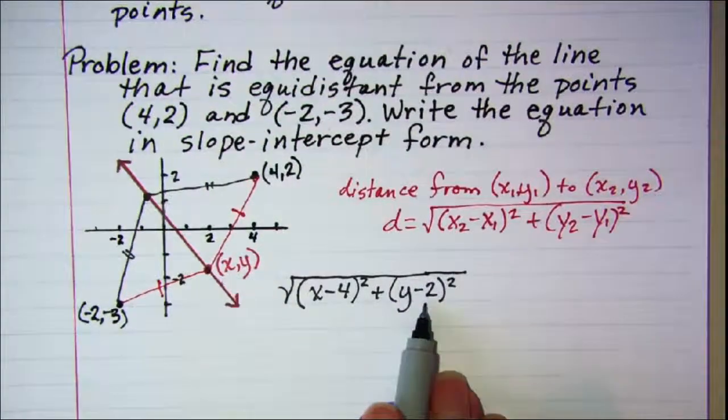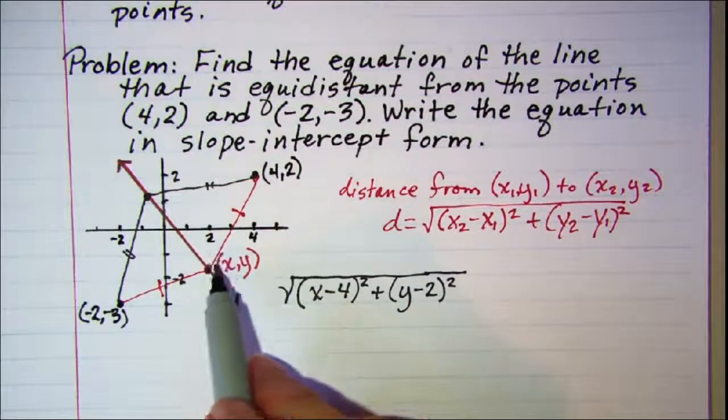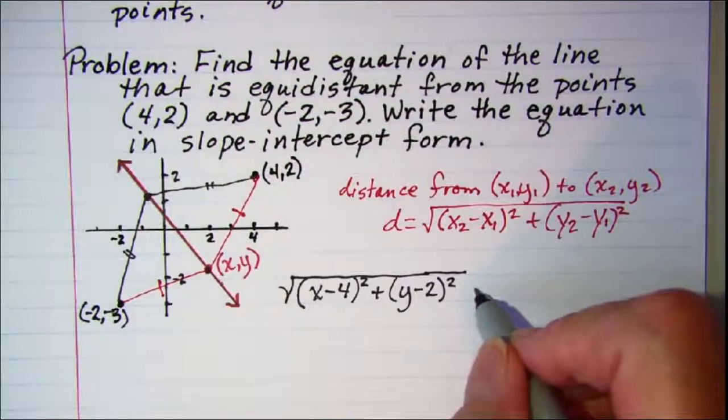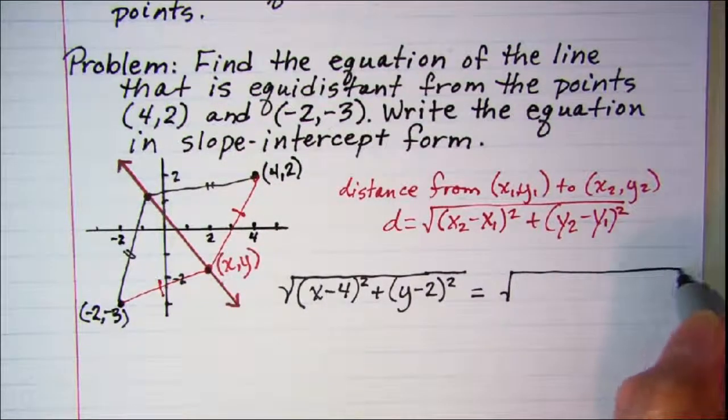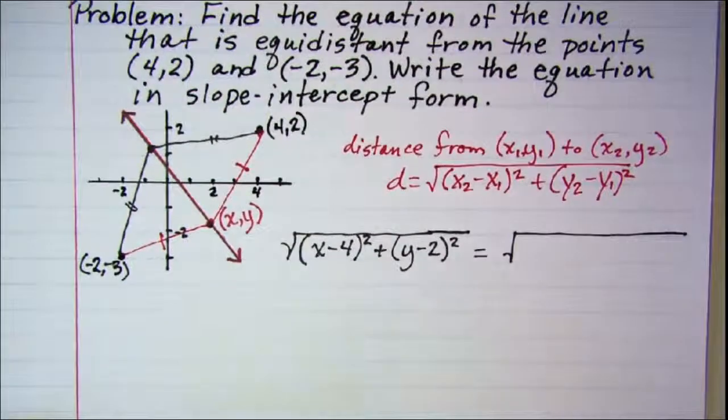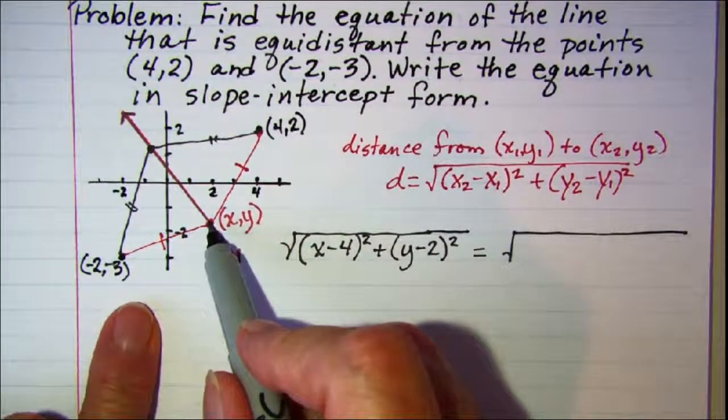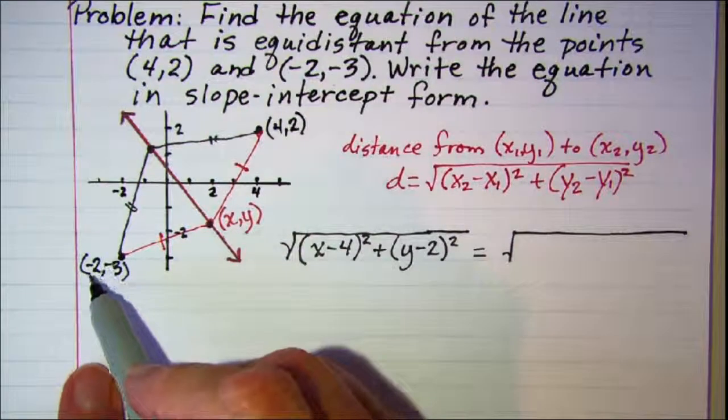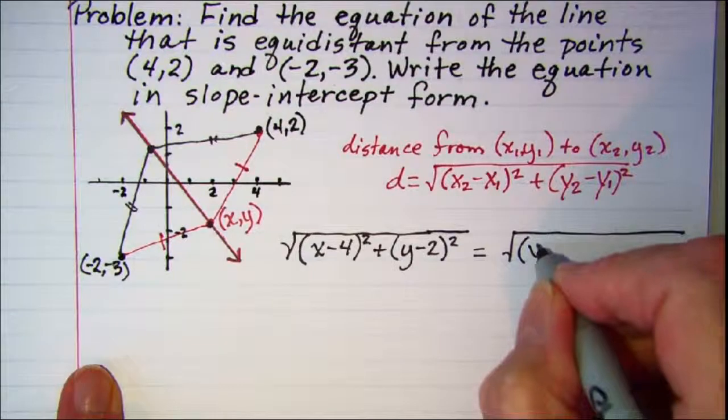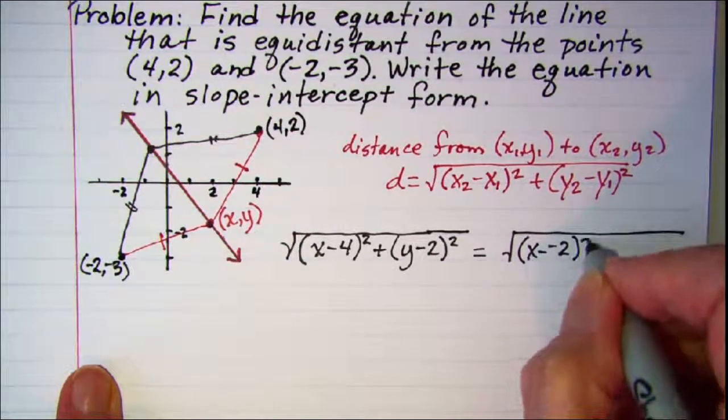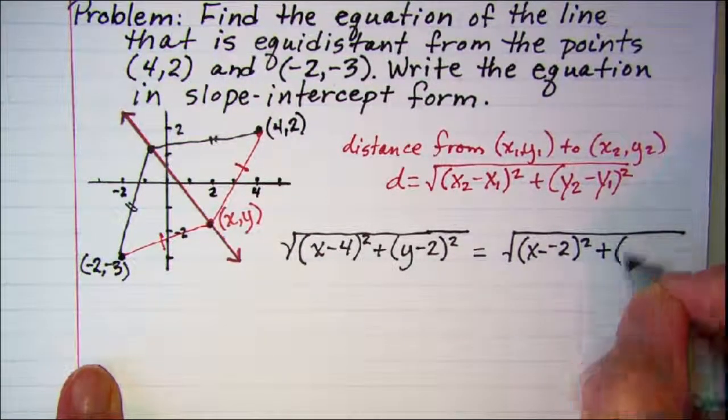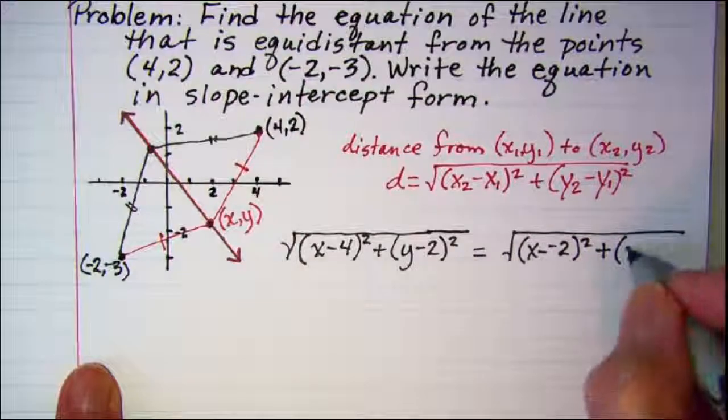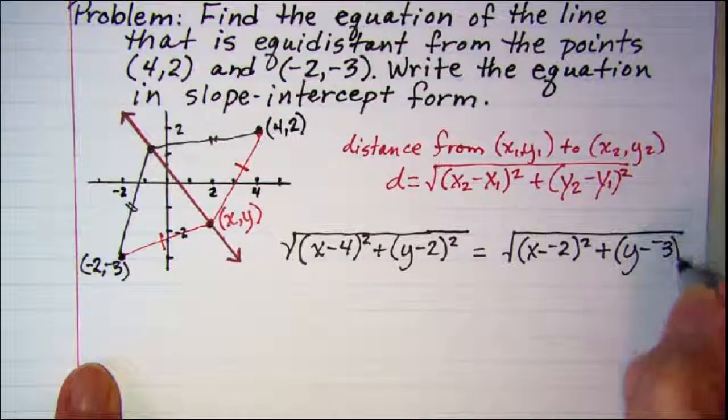So this expression represents the distance from our point on our line to the point (4, 2). Now that distance is equal to the distance from a point on our line to the other point. So we'll take (x - (-2))² plus (y - (-3))².